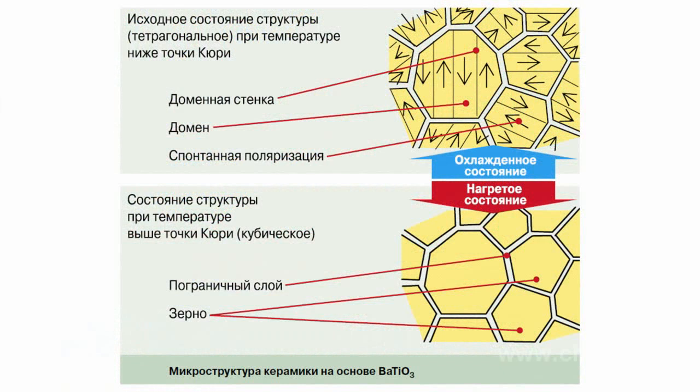Grains are divided into many randomly oriented domains at temperatures below the Curie point. Each domain has a preferential direction of crystal orientation, referred to as the direction of spontaneous polarization.